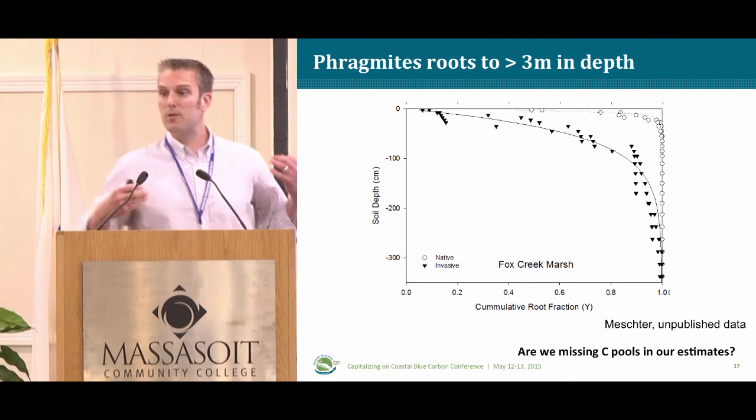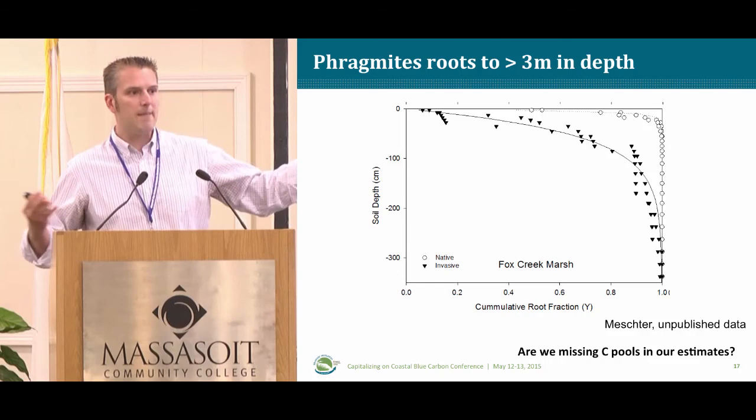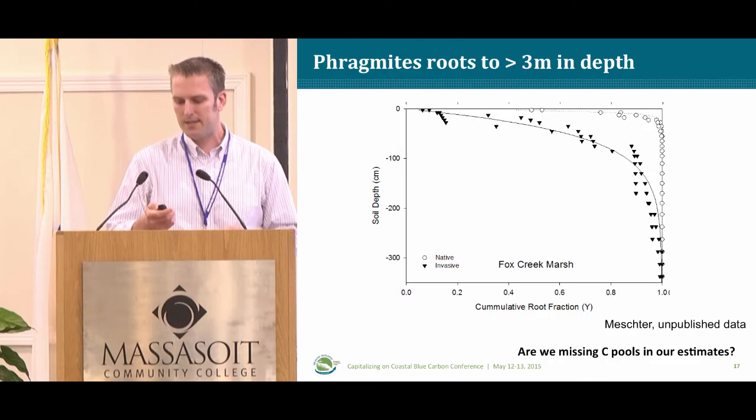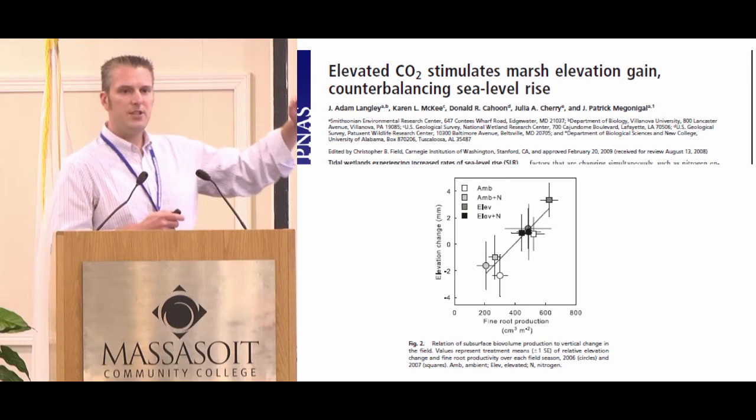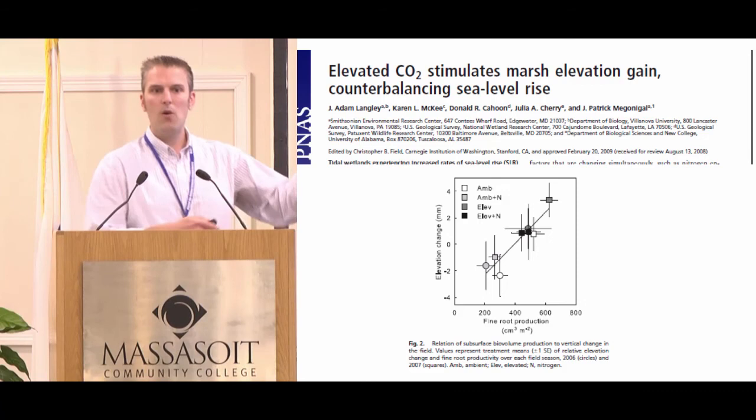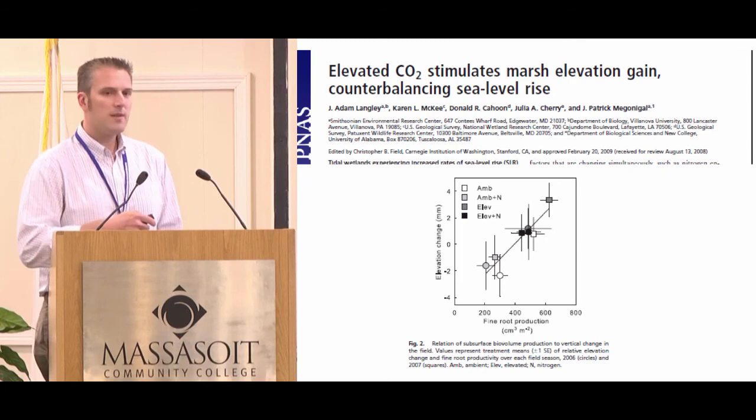The question is: are we missing carbon pools in our estimates if we're only sampling the top 30 centimeters or even the top meter? We may be missing a lot of carbon that needs to be accounted for. This is also important with respect to these wetland ecosystems' ability to keep pace with sea level rise, since soil elevation gain is directly linked to root productivity. More below-ground productivity means greater potential to keep pace with sea level rise.